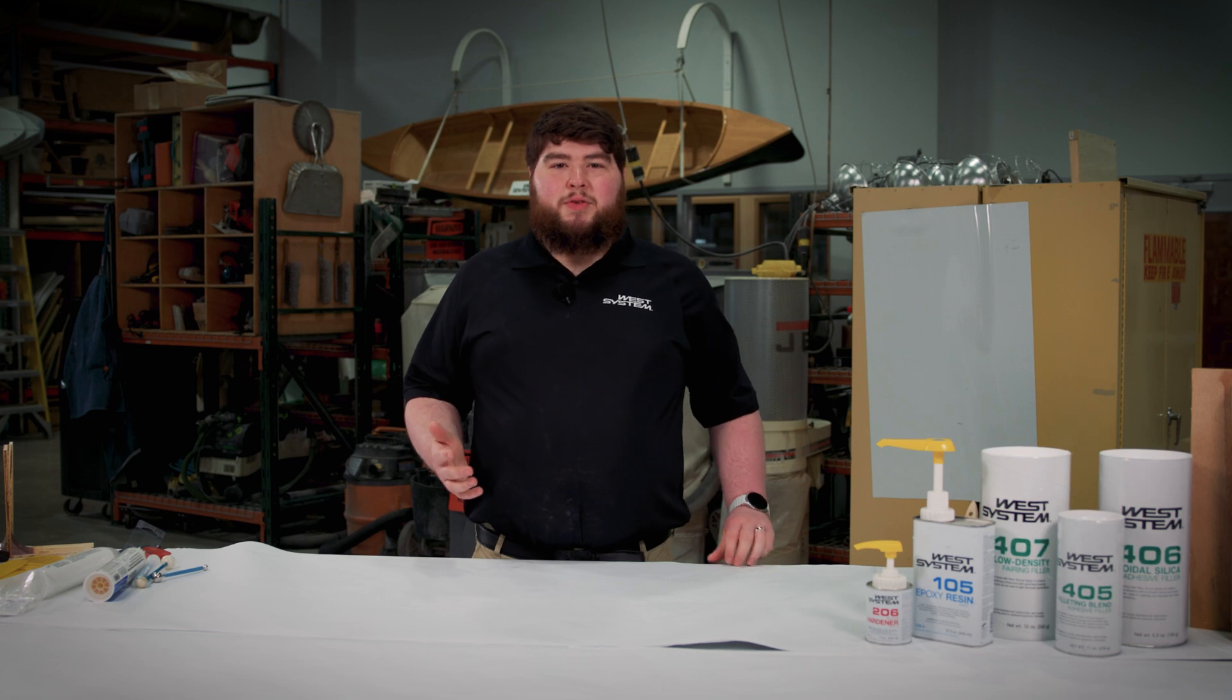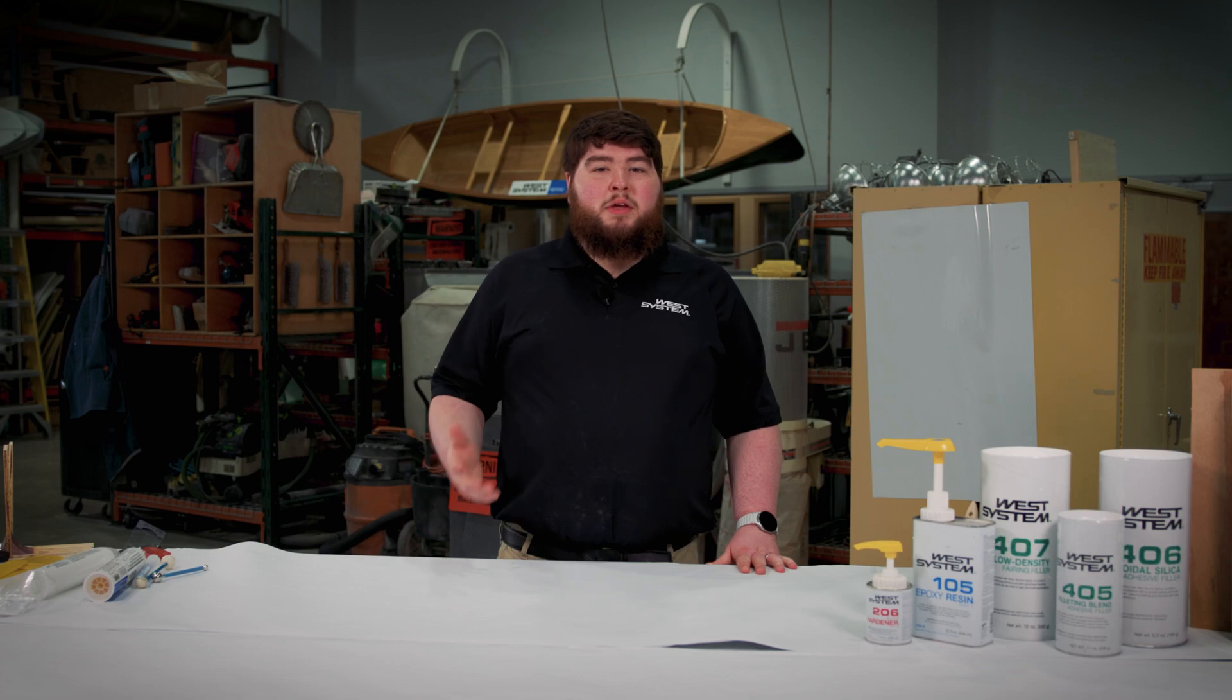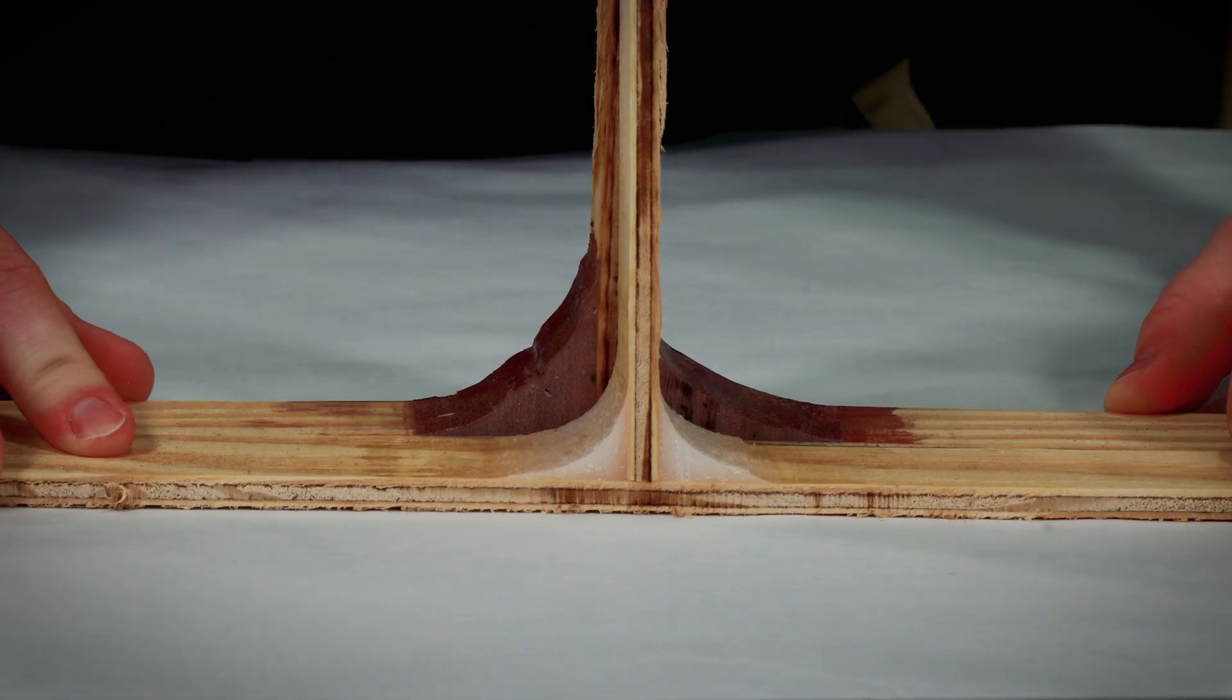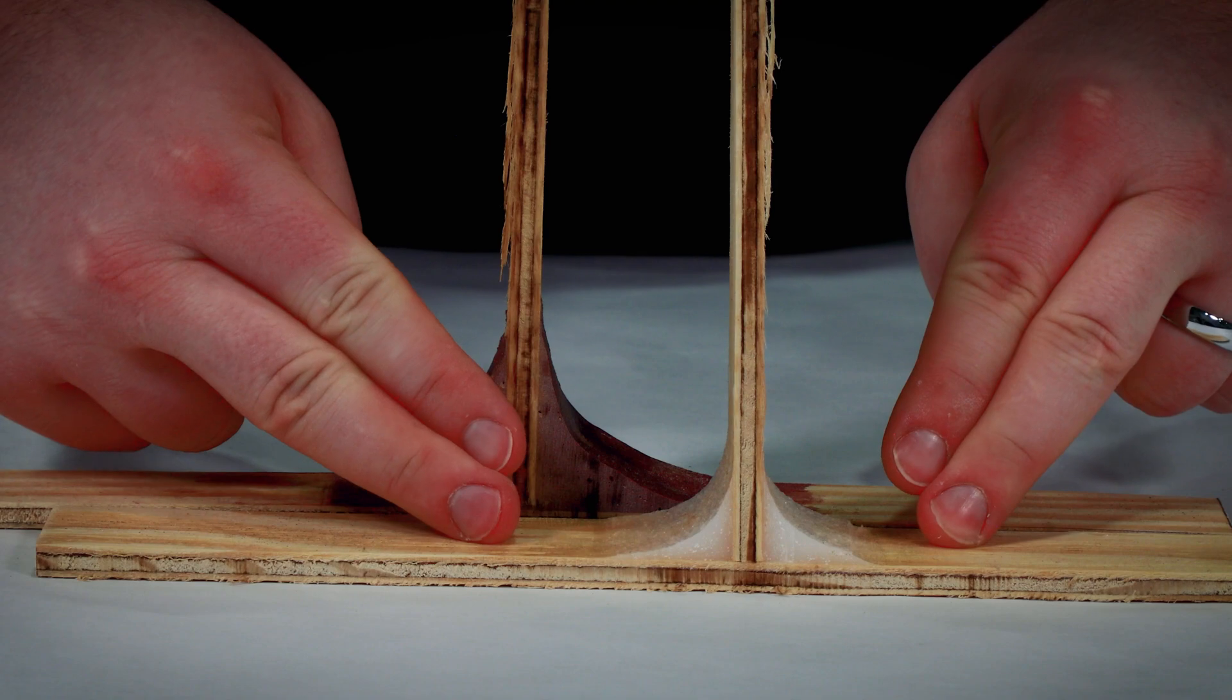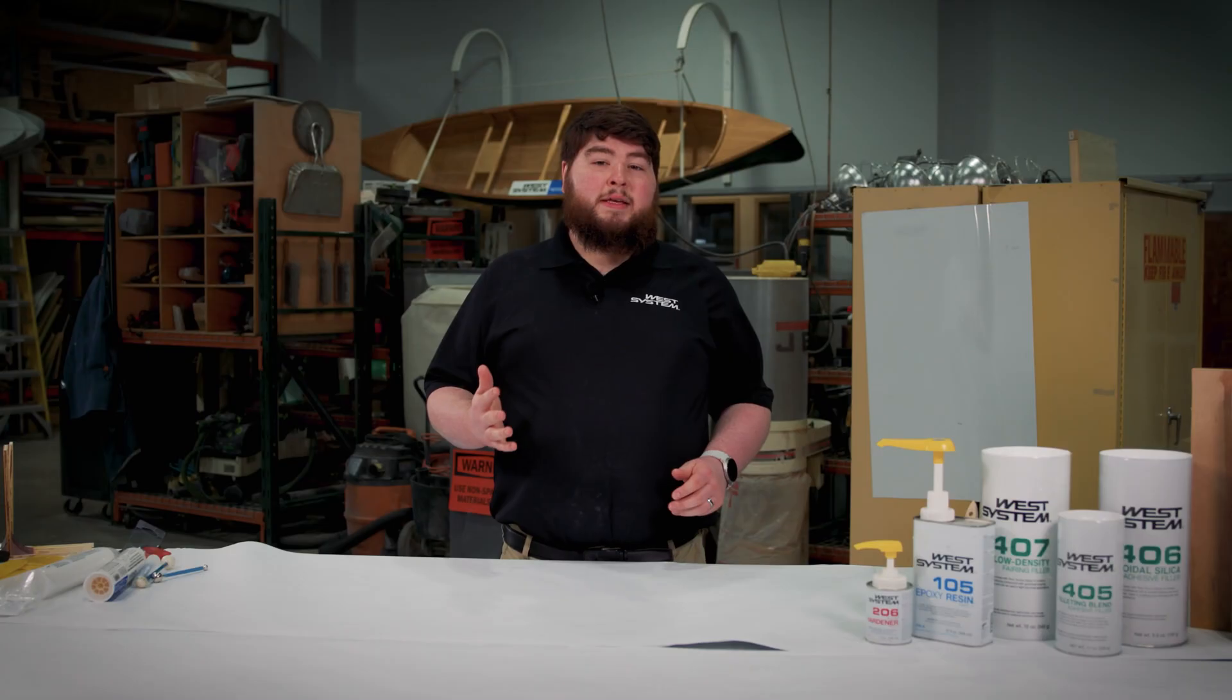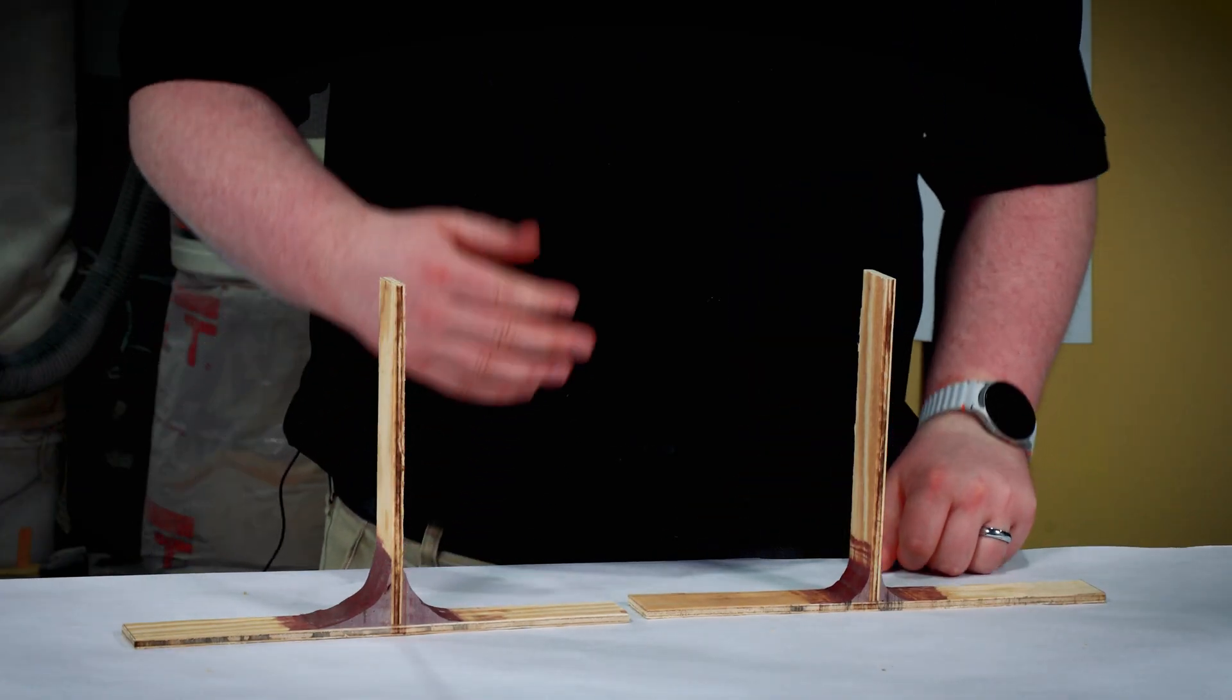Sometimes you don't need a huge fillet. If you're using your fillet primarily to transition fiberglass around a 90 degree, you can get away with a smaller fillet. You only want your fillet to be as big as it needs to be because the larger the fillet is, the more material you're going to use and the heavier it's going to be.